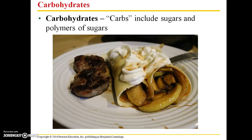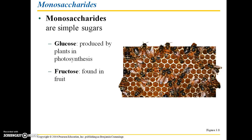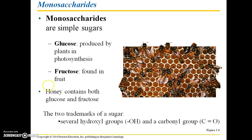Carbohydrates include sugars and polymers of sugars. The starch in a crepe, the sugars and starches in apple slices, and the sugars in whipped cream are all carbohydrates. Monosaccharides are simple sugars. Some types include glucose, which is produced by plants during photosynthesis and is a basic building block of many food chains; fructose, which is found naturally in fruit; and honey, which contains both glucose and fructose. The two trademarks of a sugar are several hydroxyl groups and a carbonyl group — a carbon atom doubly bonded to an oxygen atom.